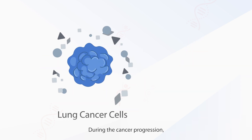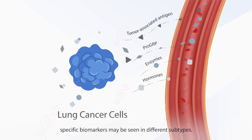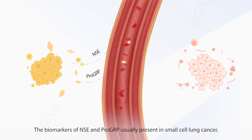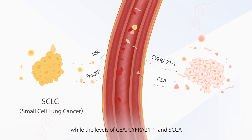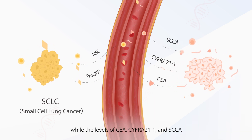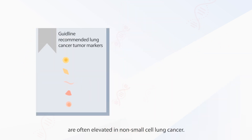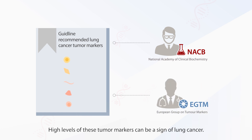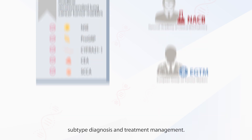During cancer progression, specific biomarkers may be seen in different subtypes. The biomarkers NSE and pro-GRP usually present in small cell lung cancer, while the levels of CEA, CIFRA-21-1, and SCCA are often elevated in non-small cell lung cancer. High levels of these tumor markers can be a sign of lung cancer, and along with other tests, tumor marker tests can help with subtype diagnosis and treatment management.